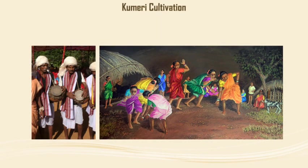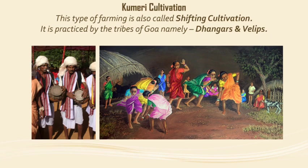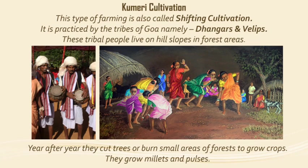Let us learn about Kumeri cultivation. This type of farming is also called shifting cultivation. It is practiced by the tribes of Goa, namely Dangas and Velips. These tribal people live on hill slopes in forest areas. Year after year they cut trees or burn small areas of forest to grow crops. They grow millets and pulses.